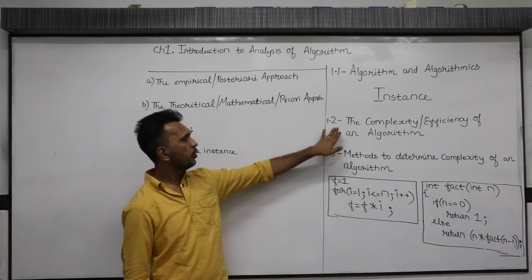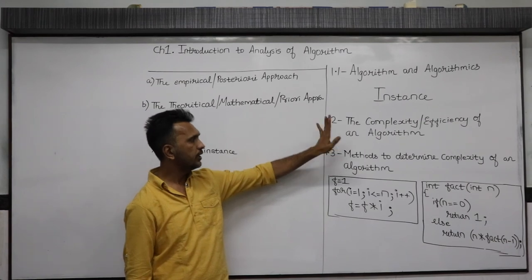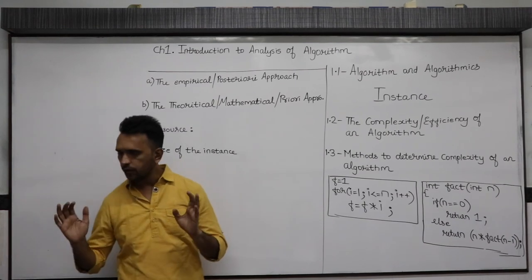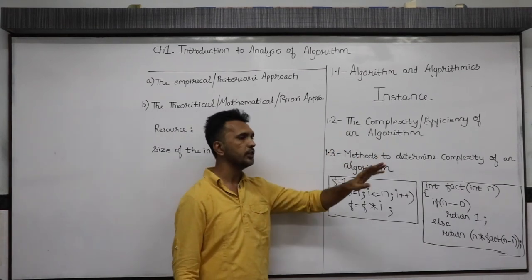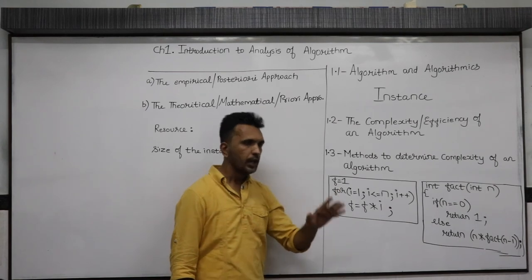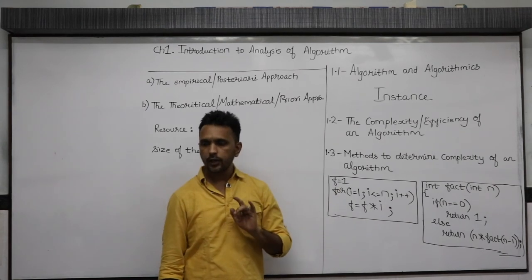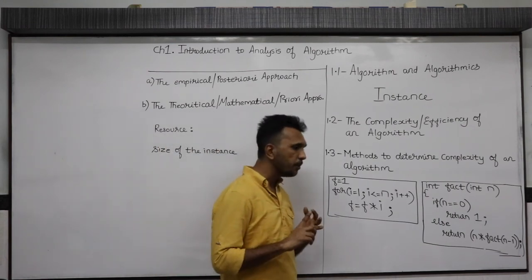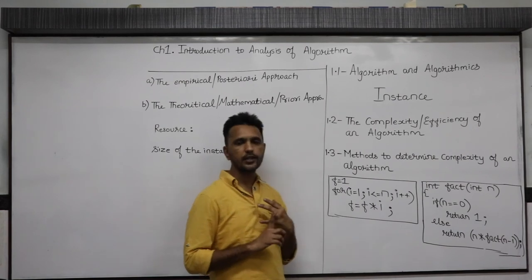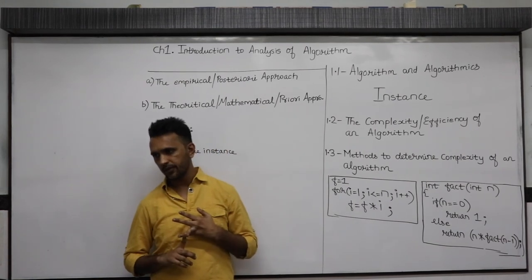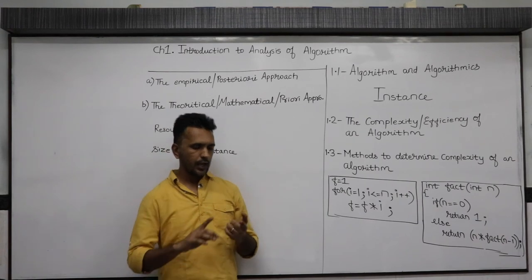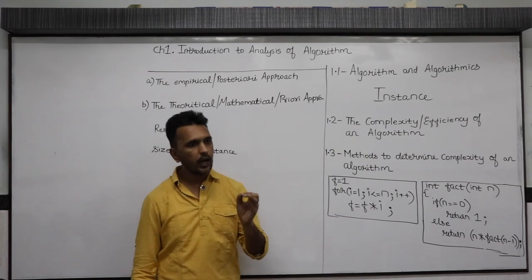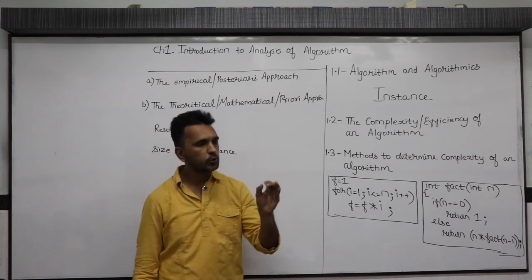The next topic is the complexity or efficiency of an algorithm. Throughout the entire lecture, we will use the words complexity and efficiency equivalently. We need to understand the meaning of time complexity, space complexity, and then the overall meaning of complexity. The time complexity of the algorithm is simply the amount of time it takes to execute.